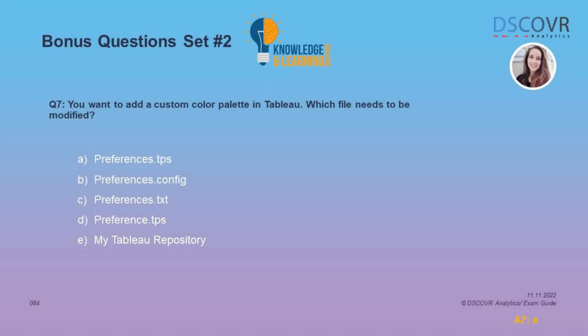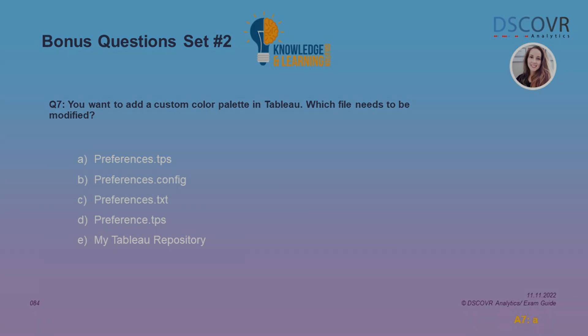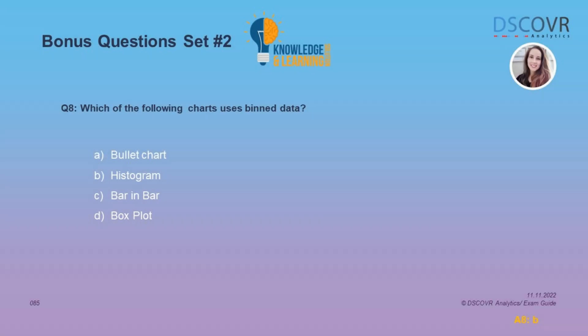Moving on to question number 7: if you want to add a custom color palette in Tableau, which file do you need to modify? The correct answer is A — you're going to add your custom color codes in the Tableau preferences file. For question number 8, we need to specify the chart type that uses binned data. The answer is B: a histogram groups values of a continuous measure into ranges or bins.